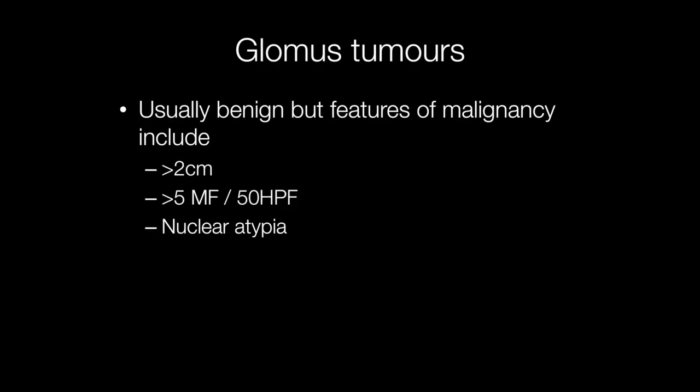Glomus tumours are invariably benign but on occasion may be malignant. Features of malignancy include a size greater than two centimetres, more than five mitotic figures per fifty high-power fields, and nuclear atypia. Nuclear atypia itself is not necessarily a feature of malignancy, in which case the tumour is known as symplastic.